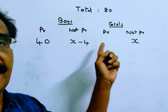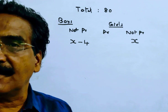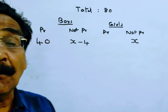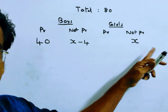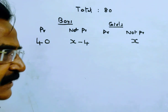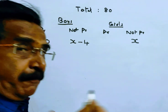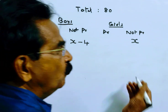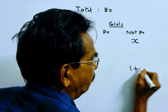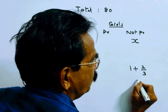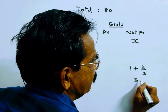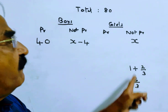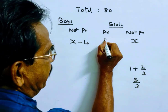Friends, the number of girls present is 66.66% more than the number of girls not present. And 66.66% means its fractional value 2 by 3. So 2 by 3 more means 1 plus 2 by 3, which equals 5 by 3. So the number of girls present is 5x by 3.